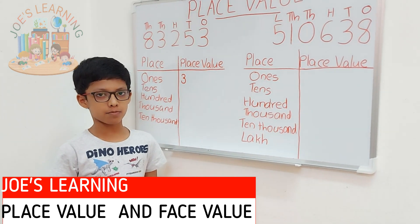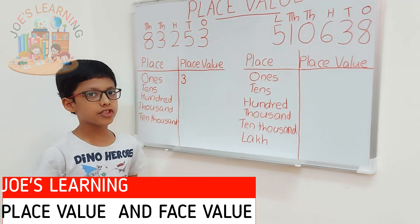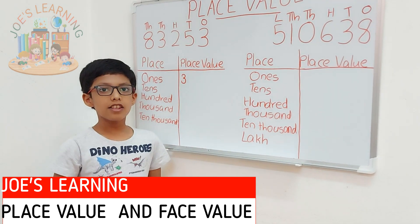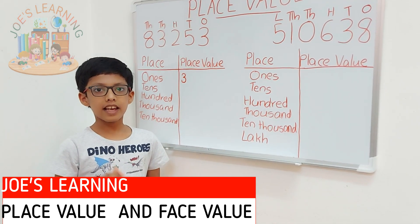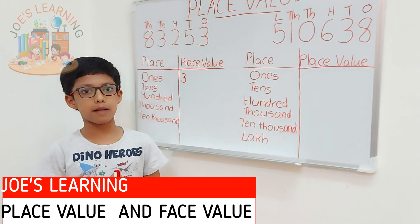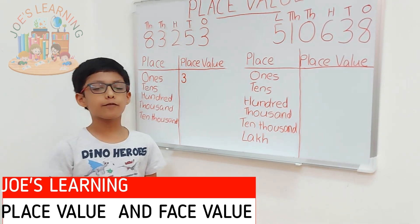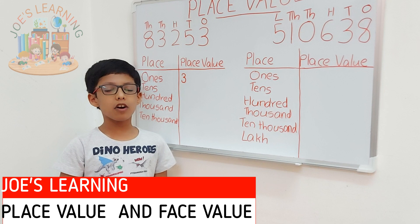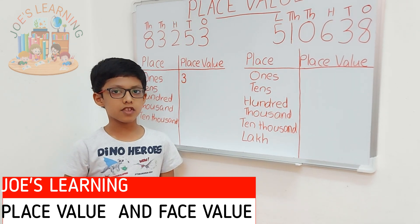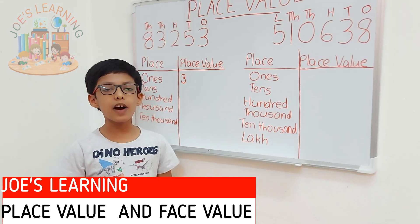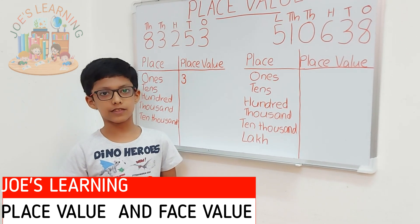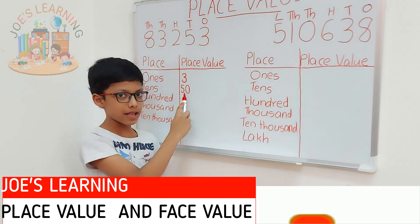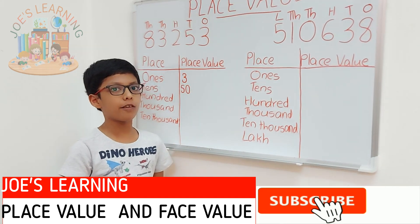Now, let's take a look at the tens place. In the tens place, there is 5. As we have done in the one's place — 3 multiplied by 1 — we have to do 5 multiplied by 10 here because it is in the tens place. So, 5 multiplied by 10 is 50. So, 50 is the place value of 5.